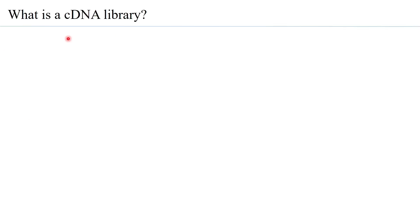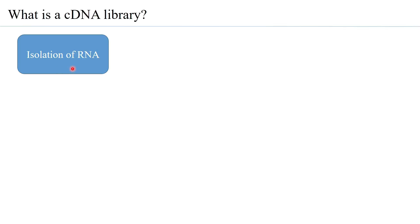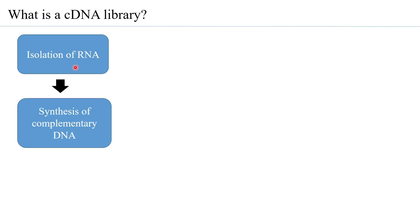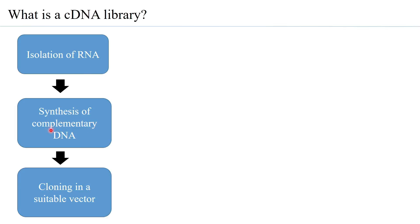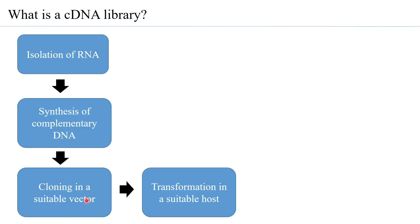When looking at the workflow of preparing a cDNA library, the first step is isolation of RNA. Once the RNA has been isolated, complementary DNA is synthesized, and then the complementary DNA obtained is cloned in a suitable vector. Depending on the size of the complementary DNA formed, a suitable vector has to be selected, and then this vector is transformed into a suitable host.